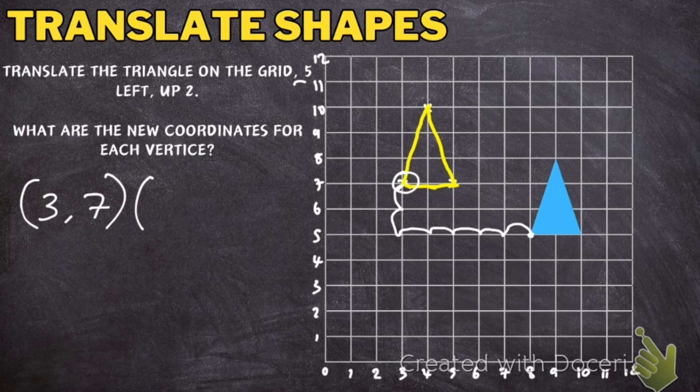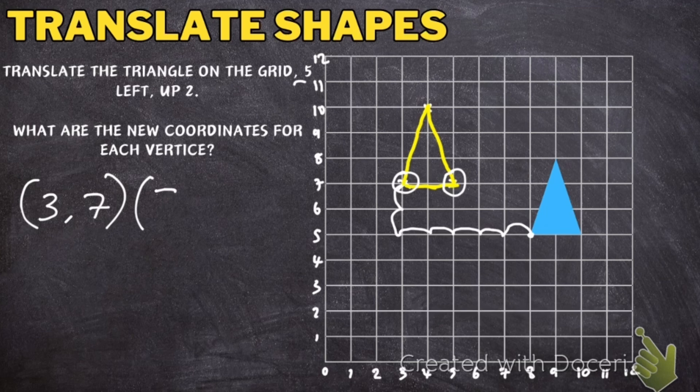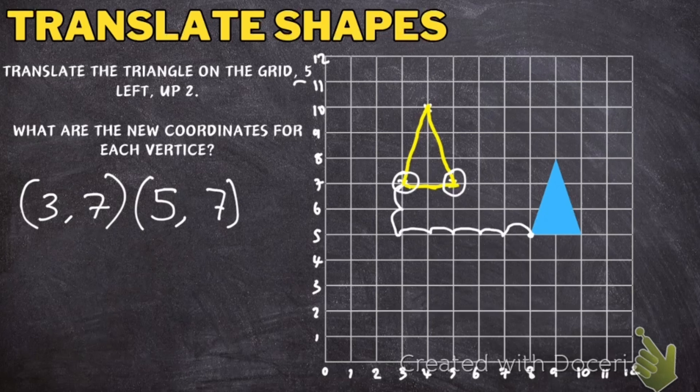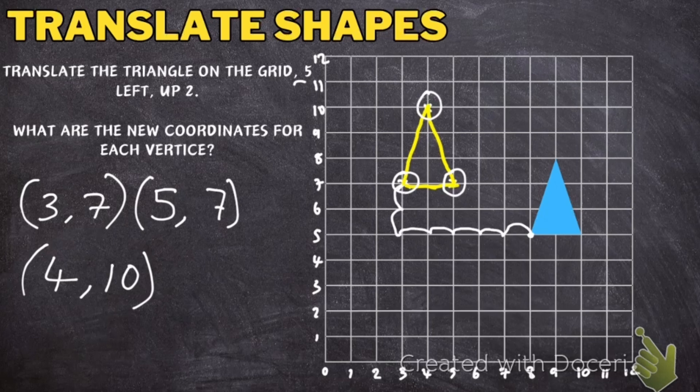I'm going to put these in brackets because that's how we write coordinates. I'm going to do this corner next. So that is 5, 7, so 5 across and 7 up. Then the final coordinate, this one here, is going to be 4 across and 10 up. So 4 across, 10 up. And there are the new coordinates for the translated triangle.